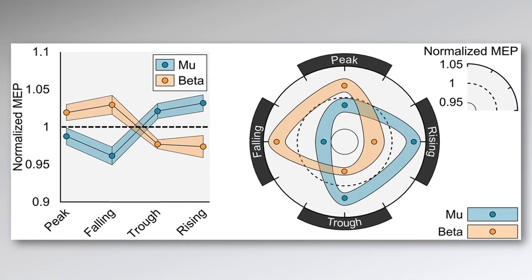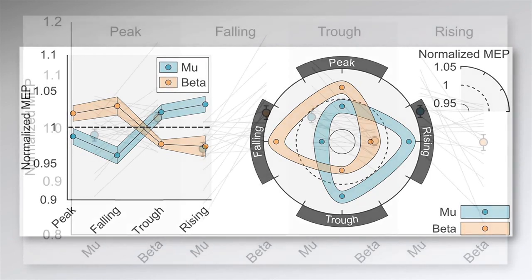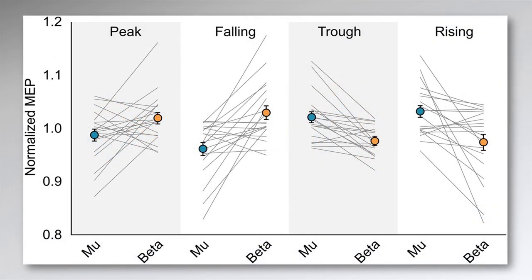The largest motor cortex to muscle responses were observed when TMS was applied at the trough and the rising phase of the mu oscillation. But for the beta rhythm, the largest responses were observed when the oscillation was at the peak or the falling phase.